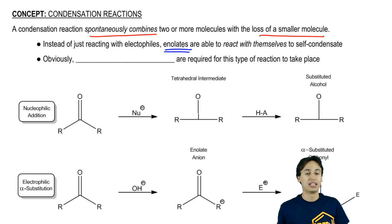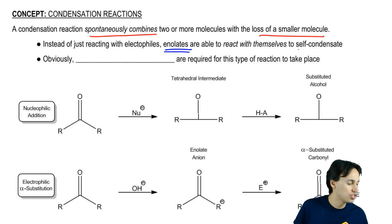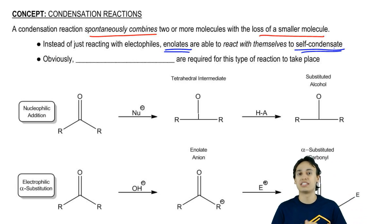We find that enolates are going to be part of the condensation because enolates are so reactive that they're not only just going to react with electrophiles as we've talked about in the past. They're also even going to be able to react with each other or with themselves to do something that's called self-condensation.